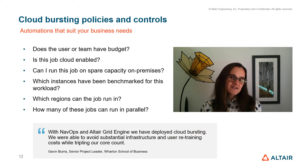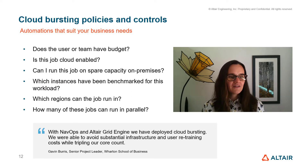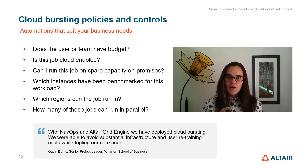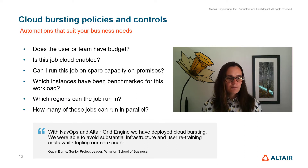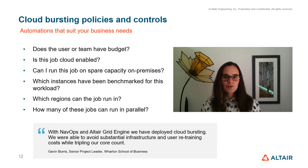So the next part is about setting up the policies or controls. A policy is really no different from a question you ask of the workload — something simple such as: does the user or team have budget? Is this job cloud-enabled, so has it been containerized? Has it been benchmarked in the cloud? What instances should we spin up to run this particular workload? You can also configure your infrastructure so that if there is spare capacity on premises, you can use that spare capacity without spinning up additional resources in the cloud.